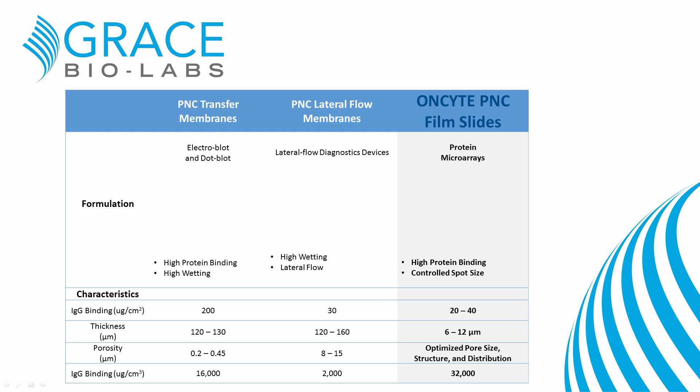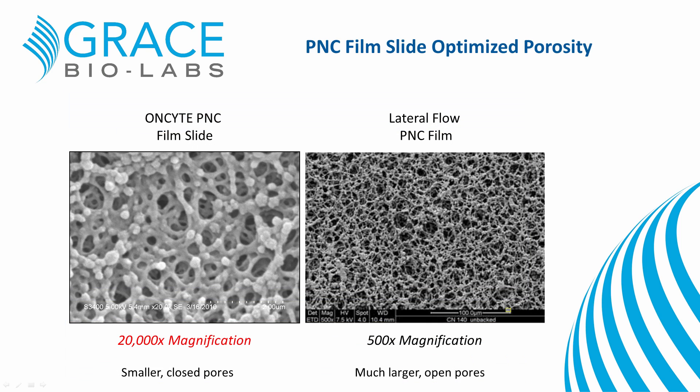On-site PNC slides are very different. This is a specialized formulation for use as a microarray binding surface. Unlike transfer and lateral flow membranes, on-site PNC is much thinner, and the porosity has been optimized to give more controlled wetting and a very high binding capacity. When expressing protein binding per unit volume rather than unit area, on-site PNC actually has the highest binding capacity of these membrane types.